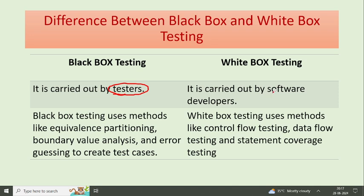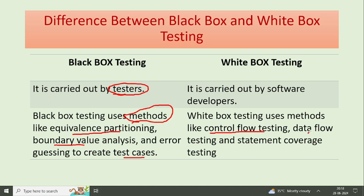Next, let's talk about the methods used. If you go to an interview, they may ask which methods are used in black box testing. The methods are: equivalence partitioning, boundary value analysis, and error guessing to create test cases. But in white box testing, the methods used are control flow testing, data flow testing, and statement coverage testing.